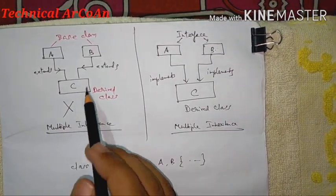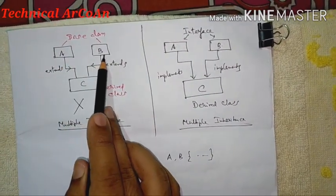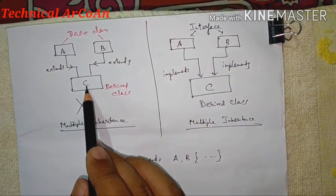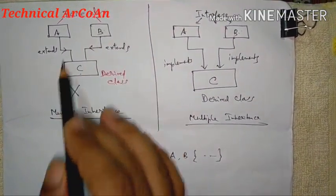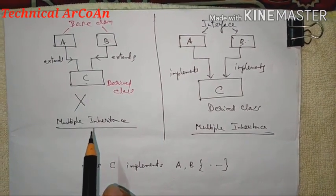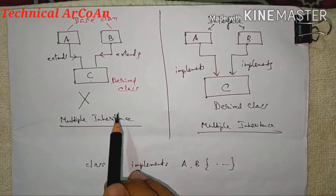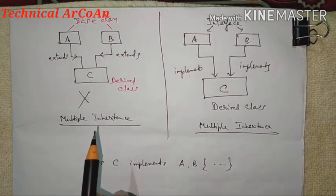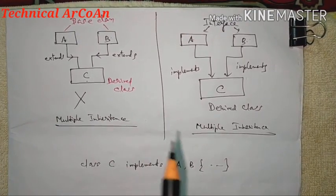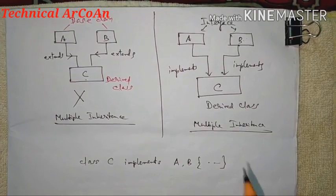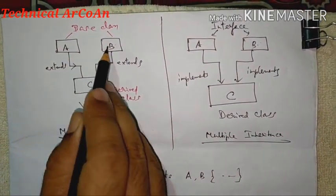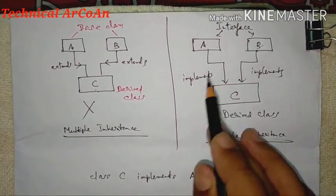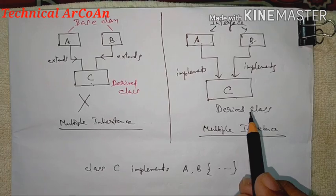Now consider this diagram: there is a class A and class B, both as base classes, and we want class C to extend both — this is known as multiple inheritance. This feature exists in C++, but Java does not support multiple inheritance through classes. That's why the interface was introduced — more than one interface can be implemented in a single class.